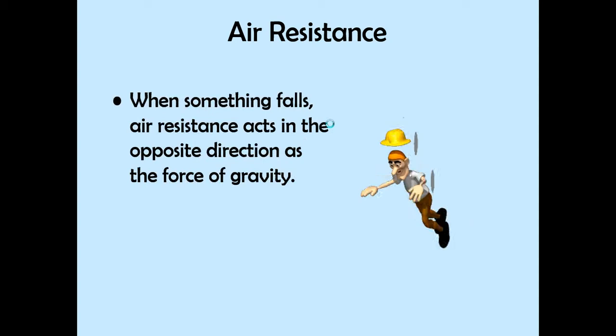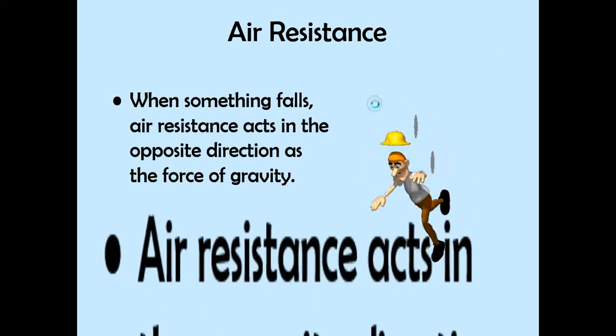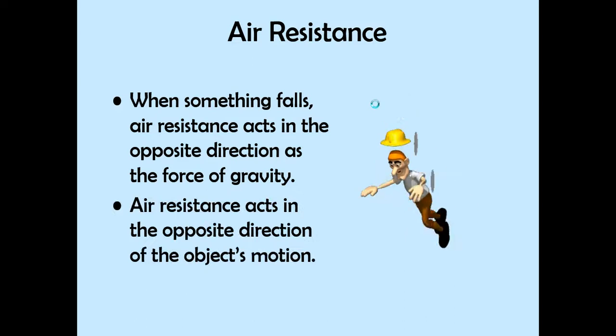When something falls, air resistance is going to act in the opposite direction of gravity. That means air resistance acts in the opposite direction of the object's motion. Gravity pulls it down to make it fall, and air resistance pushes up on the object.